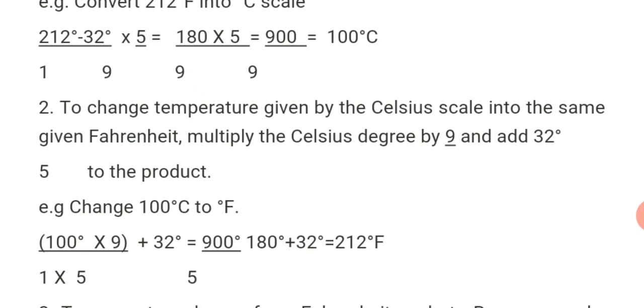To convert from Celsius scale to Fahrenheit scale, multiply the Celsius degree by 9 over 5 and add 32 to the product.